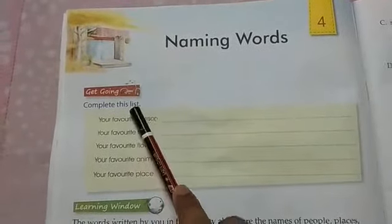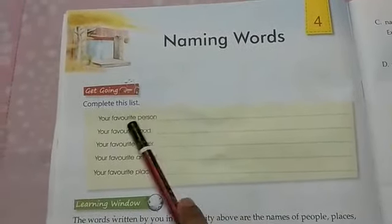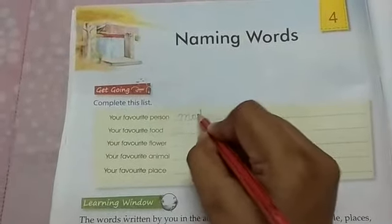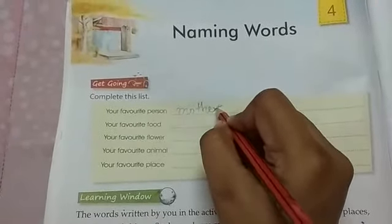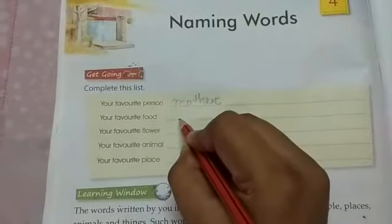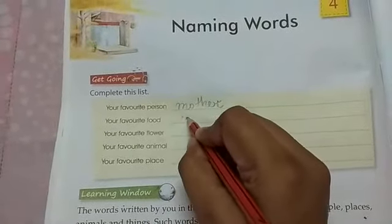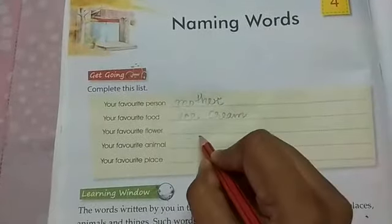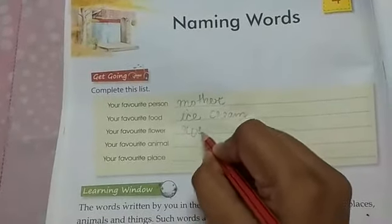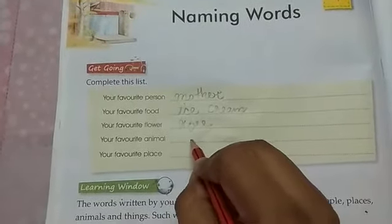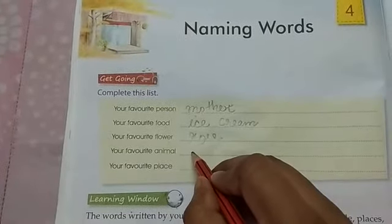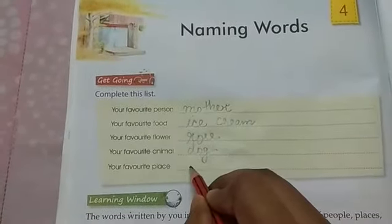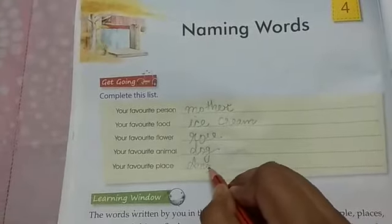Now let us complete this list. Your favorite person — Mother. Your favorite food — Ice cream. Your favorite flower — Rose. Your favorite animal — Dog. Your favorite place — Amritsar.